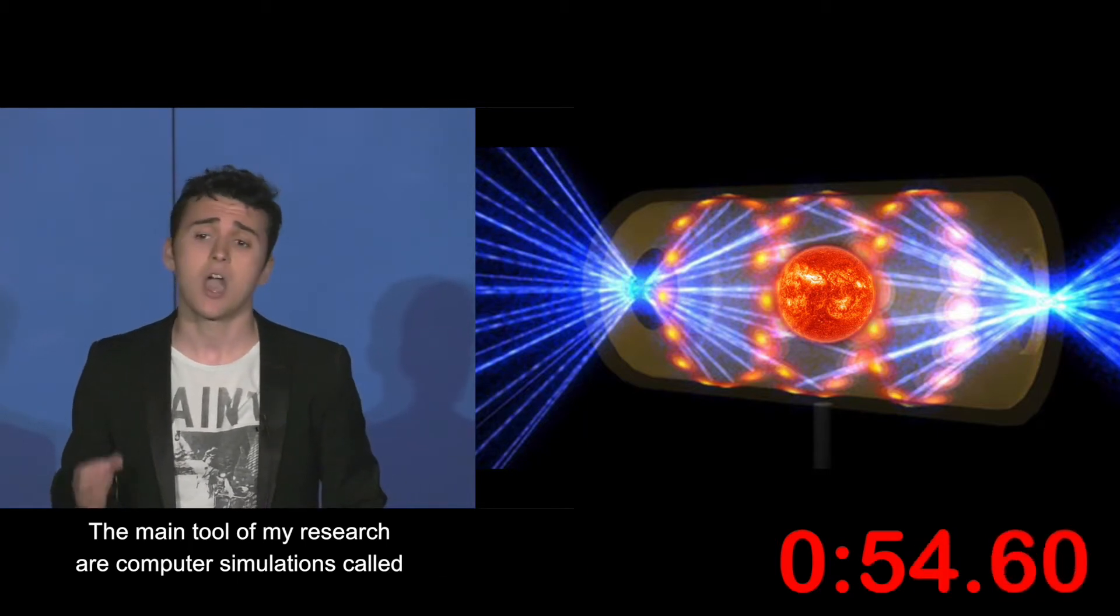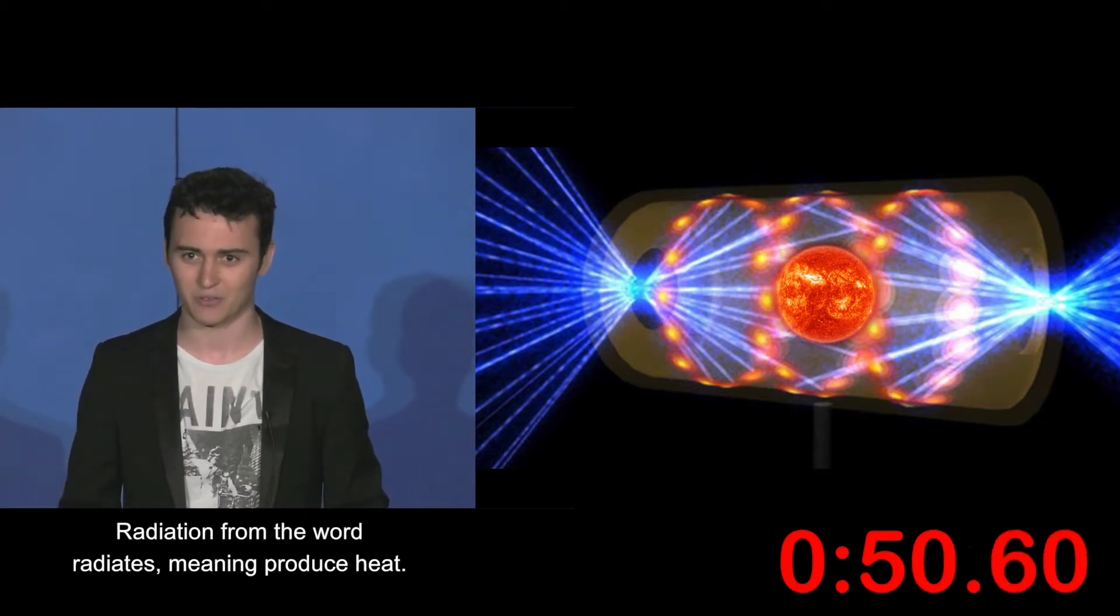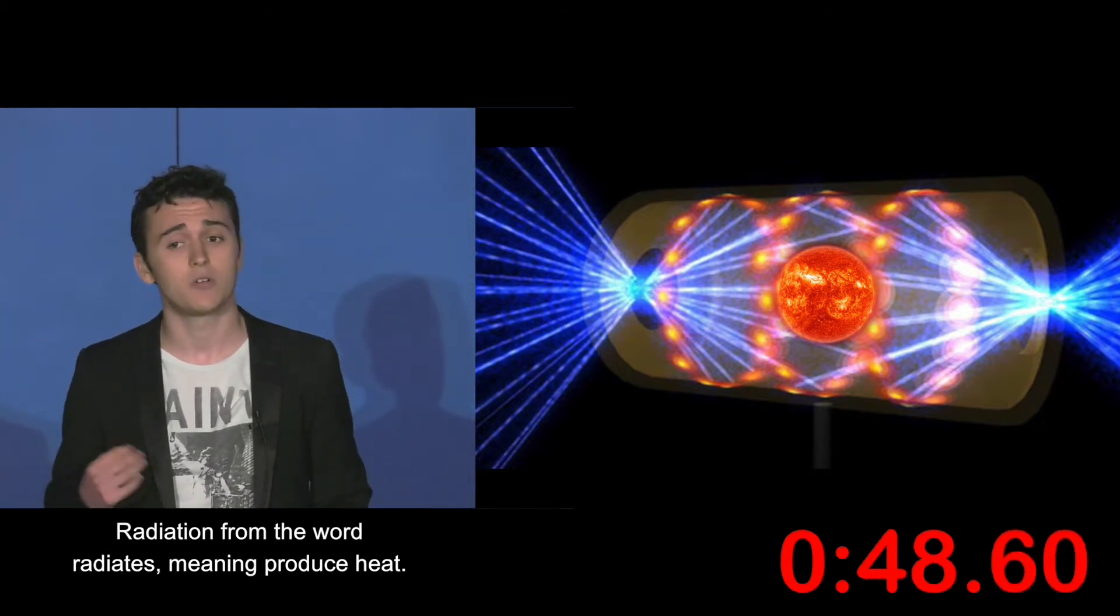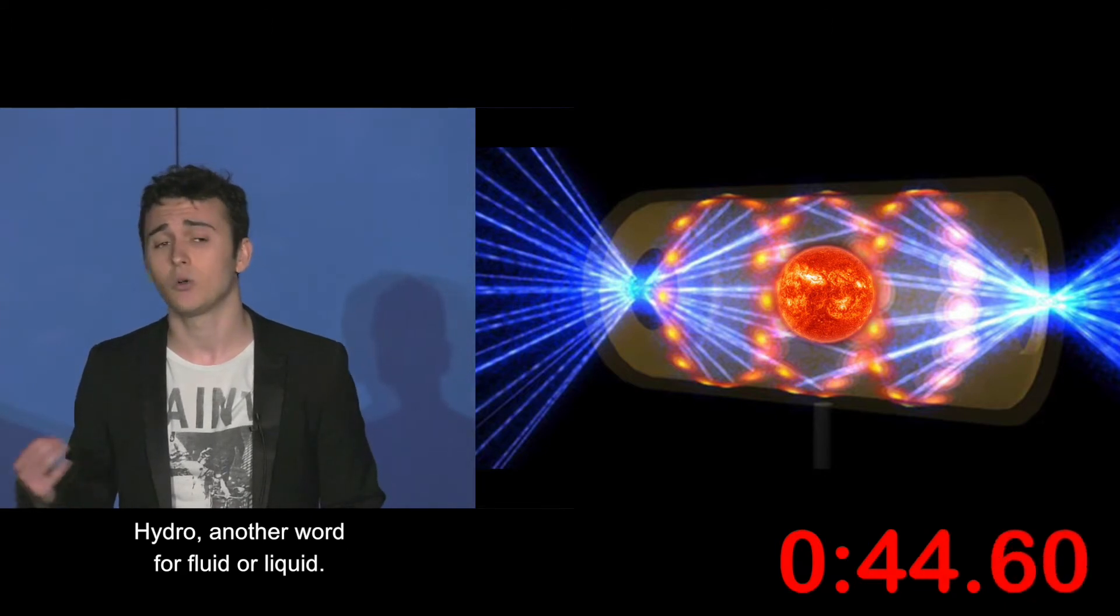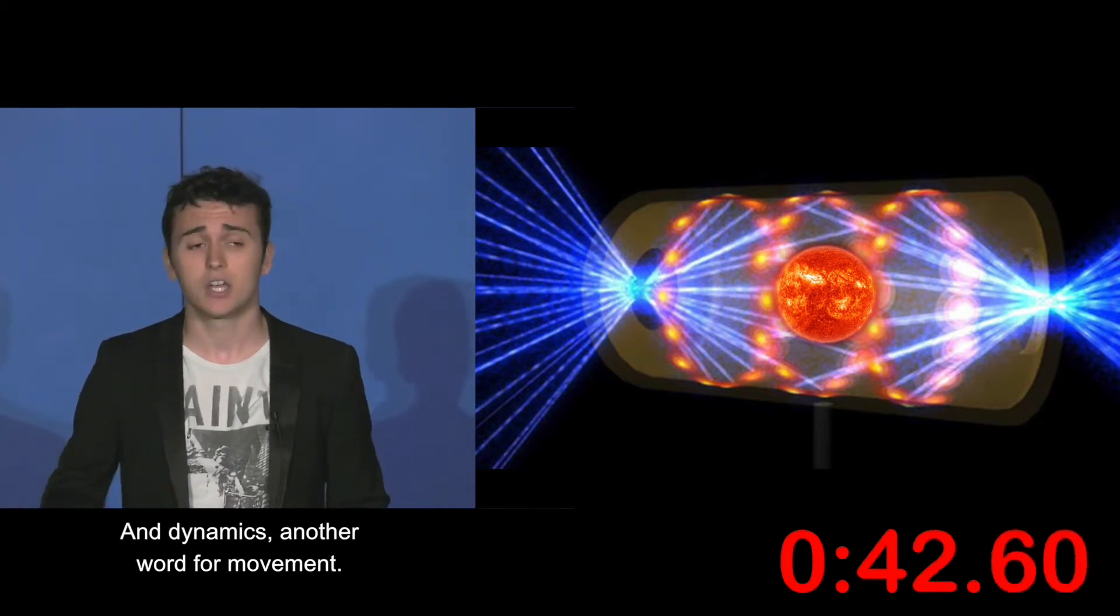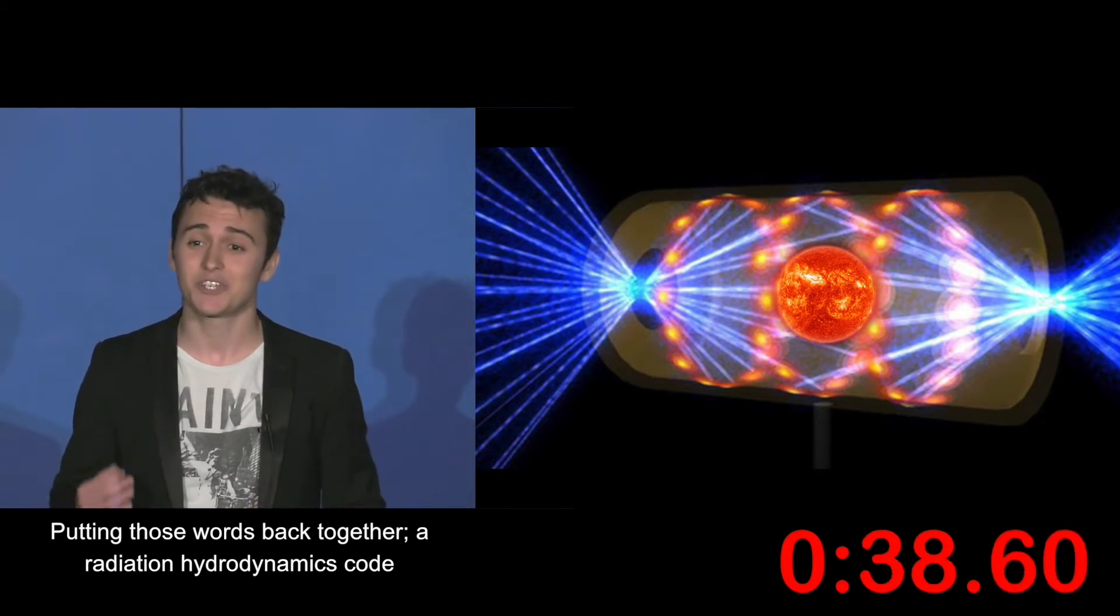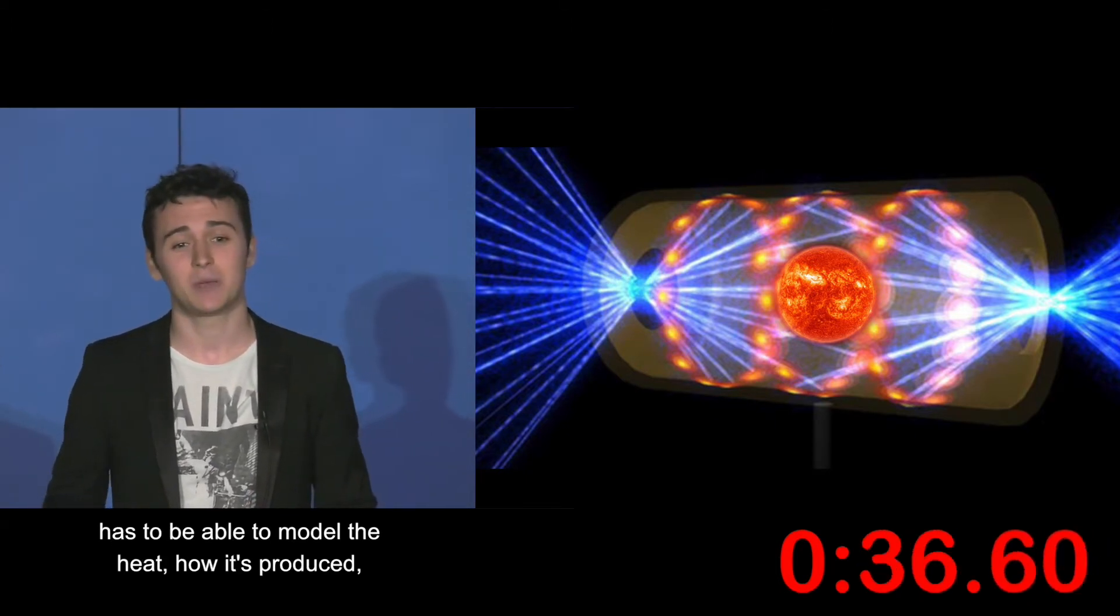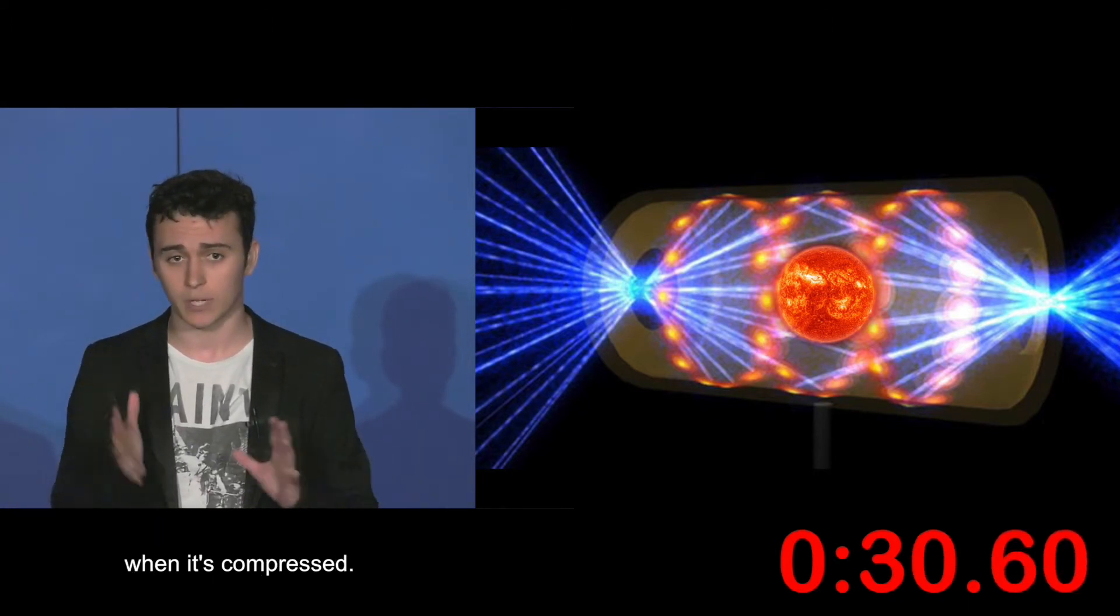The main tool of my research are computer simulations called radiation hydrodynamics codes. Radiation, from the word radiate, meaning produce heat. Hydro, another word for fluid or liquid. And dynamics, another word for movement. Putting those words back together, a radiation hydrodynamics code has to be able to model the heat, how it's produced and how it transports through the fuel, and also needs to be able to model how the fuel moves when it's compressed.